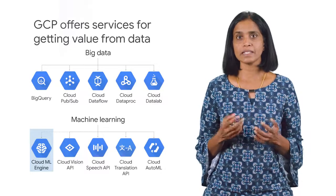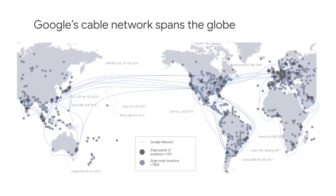Managed services dealing with big data and machine learning are available as well. Our data centers around the world are interconnected by the Google network, which by some publicly available estimates carries as much as 40% of the world's internet traffic today. This is the largest network of its kind on Earth, and it continues to grow. It's designed to provide the highest possible throughput and the lowest possible latencies for applications. The network interconnects with the public internet at more than 90 internet exchanges and more than 100 points of presence worldwide. When an internet user sends traffic to a Google resource, we respond to the user's request from an edge network location that will provide the lowest delay or latency.